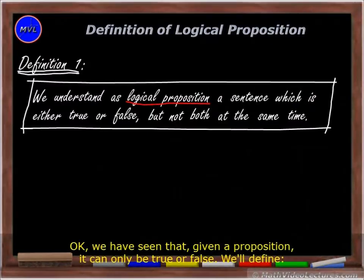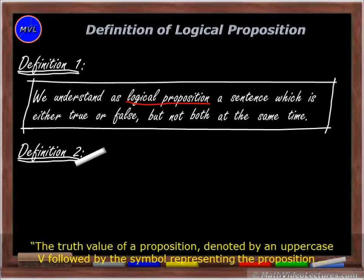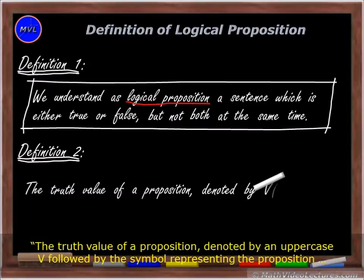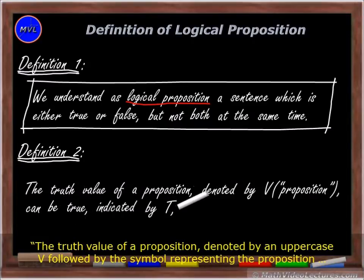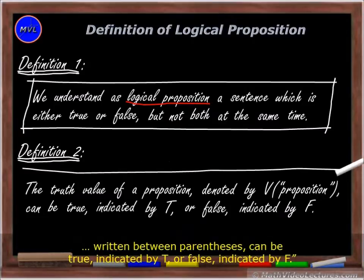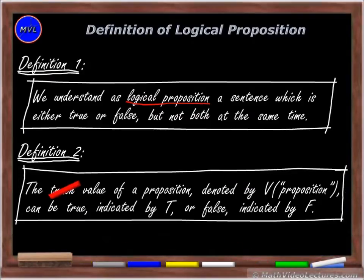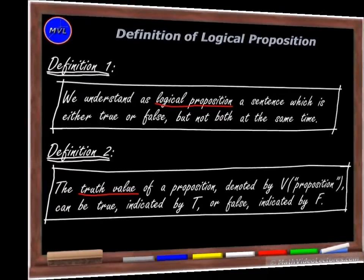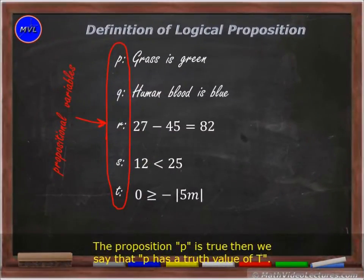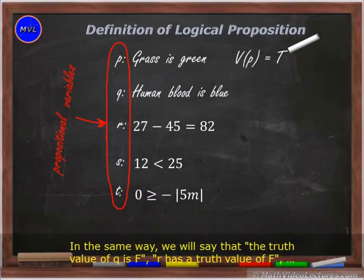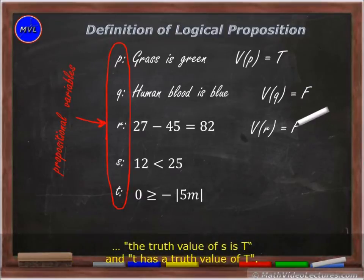Okay, we have seen that, given a proposition, it can only be true or false. We'll define: the truth value of a proposition, denoted by an uppercase V followed by the symbol representing the proposition written between parentheses, can be true, indicated by T, or false, indicated by F. The proposition p is true. Then, we say that p has a truth value of T. In the same way, the truth value of q is F, r has a truth value of F, the truth value of s is T, and t has a truth value of T.